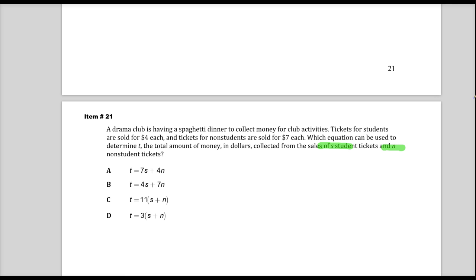They want you to find the total amount, which is T, using student tickets and non-student tickets. Now, the reality is, if I have the number of tickets, all I have to do is multiply it by the price. So if I want to make sure that I have this correct, I just need to put the number next to the correct item.